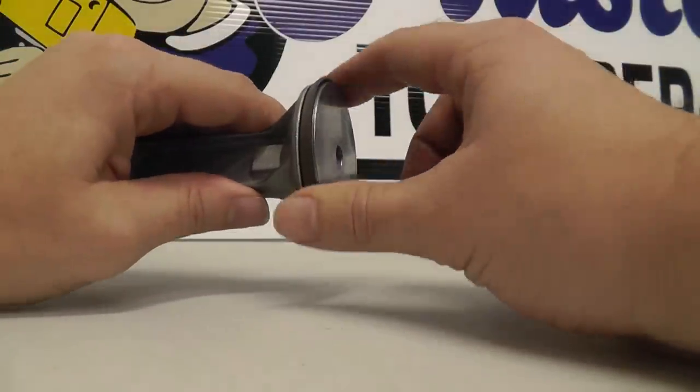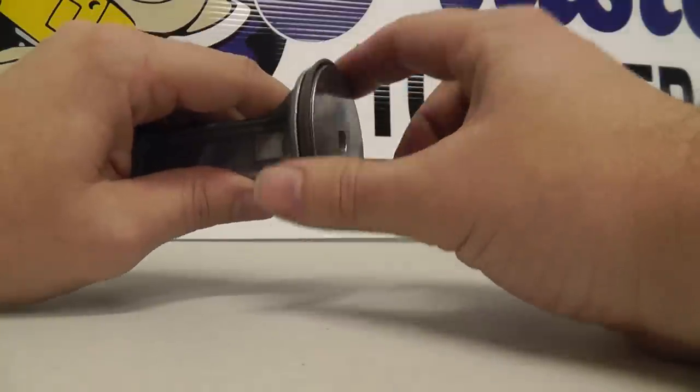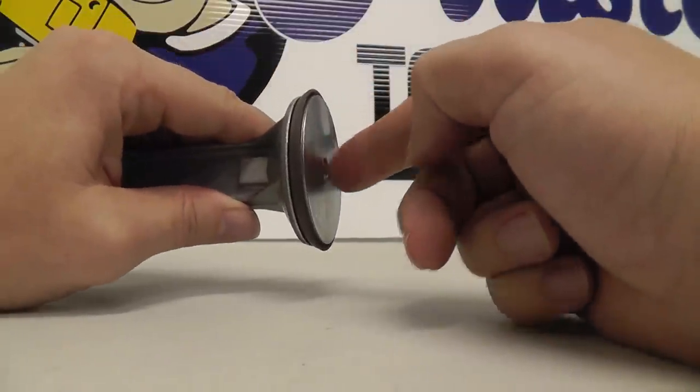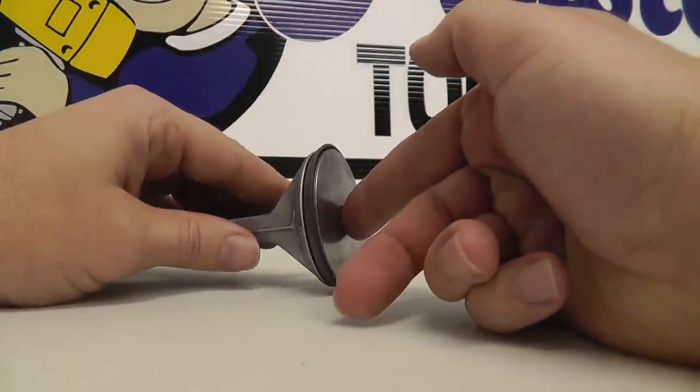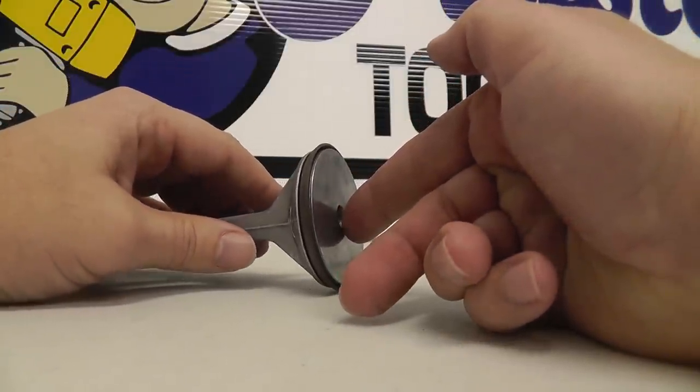Instead of it coming preformed, you'll simply form it by installing it and by the piston being installed into the cylinder itself.